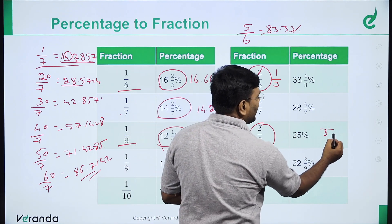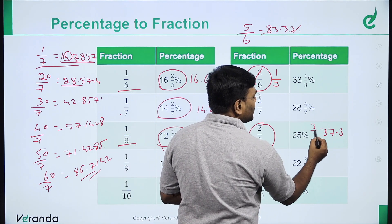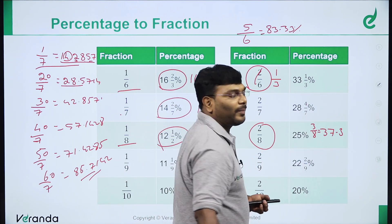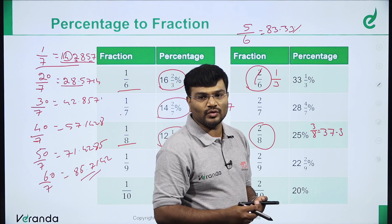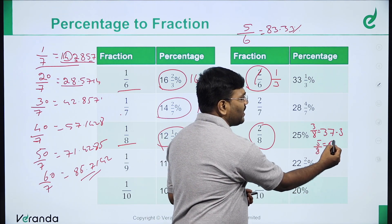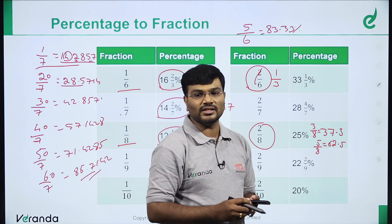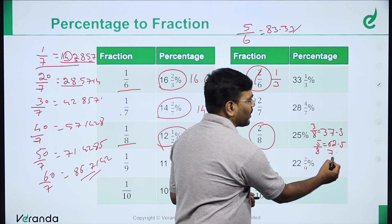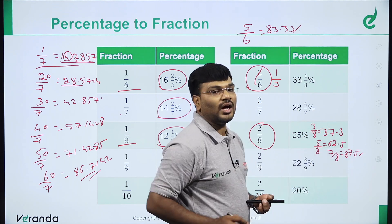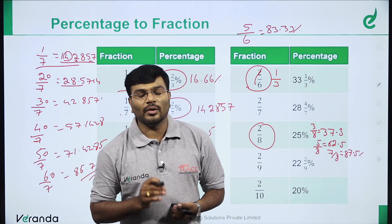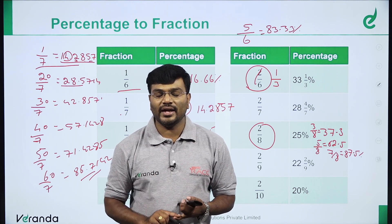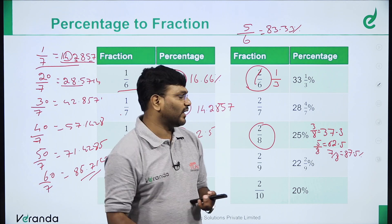3 by 8 is 37.5%. 4 by 8 simplifies to 1 by 2. 5 by 8 is 62.5%. 7 by 8 is 87.5%. So for 1 by 8 multiples: 1 by 8, 3 by 8, 5 by 8, 7 by 8 — these are very important.